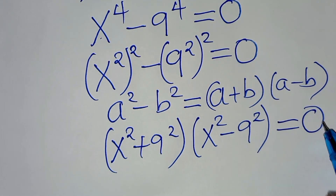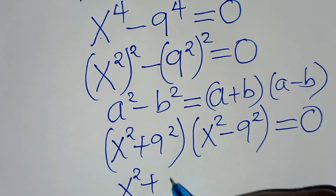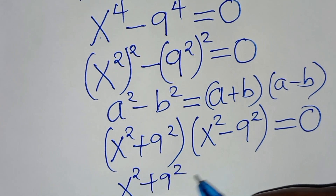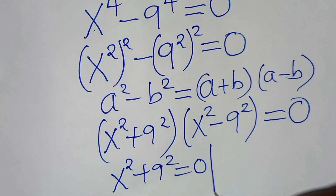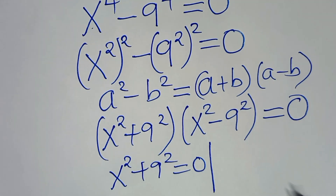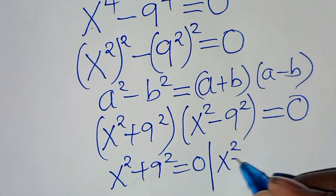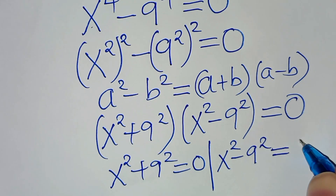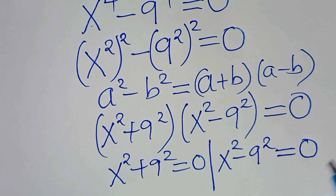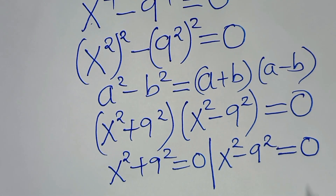So we have two parts here. The first part is x squared plus 9 squared, equal to 0. And the second part is x squared minus 9 squared, equal to 0. So let's solve these two parts.